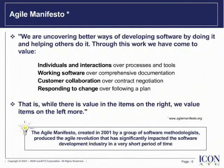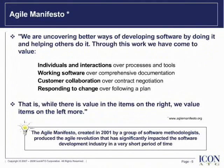In this manifesto, they stated: we are uncovering better ways of developing software by doing it and helping others do it. Through this work, we have come to value individuals and interactions over processes and tools, working software over comprehensive documentation, customer collaboration over contract negotiation, and responding to change over following a plan. That is, while there is value in the items on the right, we value items on the left more.